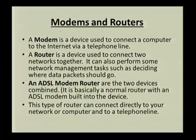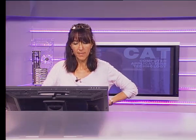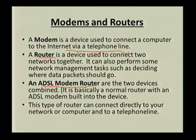Another thing we need to get connected is a modem or a router. A modem is a device used to connect a computer to the internet via a phone line. A router is a device used to connect two networks together. If you want an ADSL line, you get an ADSL modem router — two devices combined, basically a normal router with an ADSL modem built in, which can connect directly to your network or computer and to a telephone line.